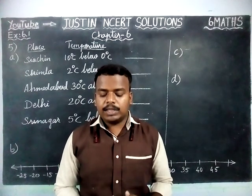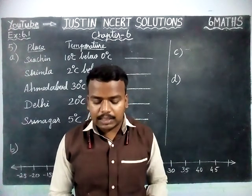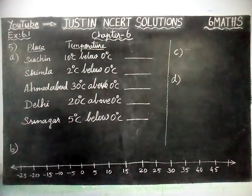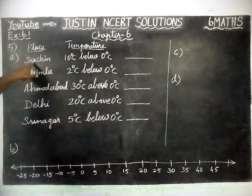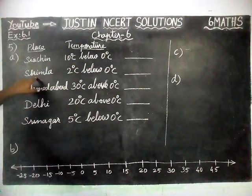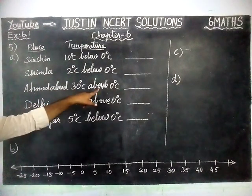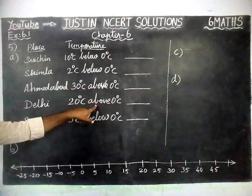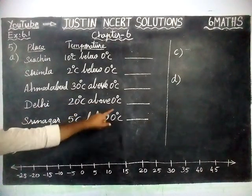Here, following is the list of temperatures of 5 places in India on a particular day of the year. The place and temperature: Siachin, 10 degree Celsius below 0; Simla, 2 degree Celsius below 0; Ahmedabad, 30 degree Celsius above 0; Delhi, 20 degree Celsius above 0; and Srinagar, 5 degree Celsius below 0.